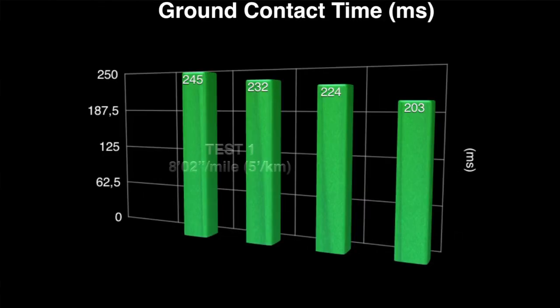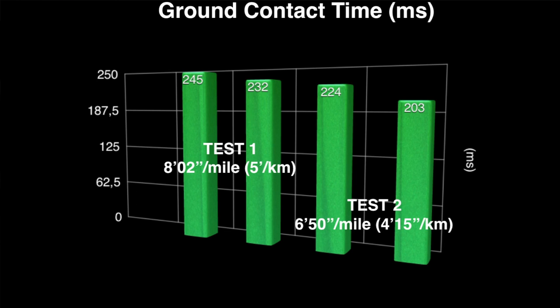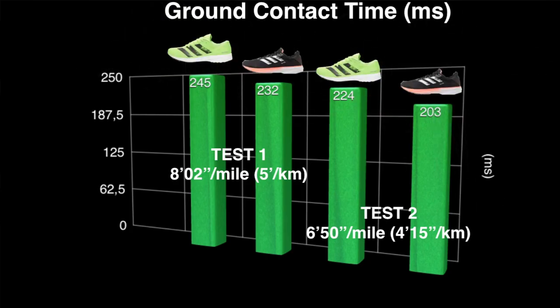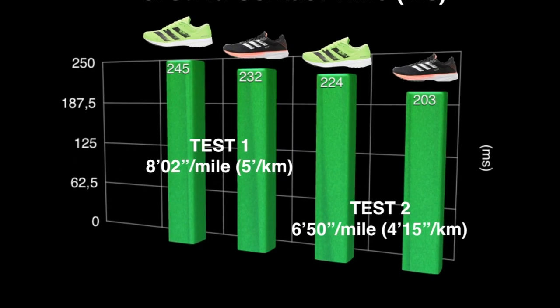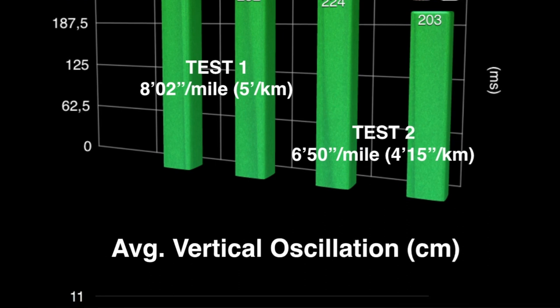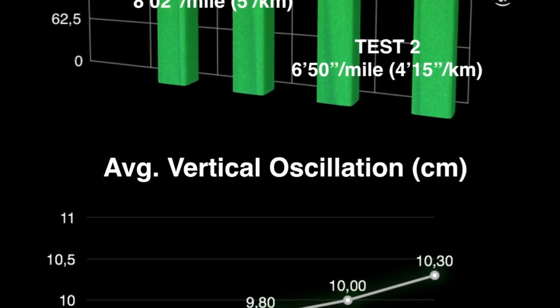Let's start with the first two tests — the slower ones. As you can see here, these are the ground contact times in milliseconds, which seem to be slightly different at the same pace using different shoes. The SL20 has in both tests the shorter contact time, meaning I'm expecting a higher vertical oscillation. And actually, looking at the vertical oscillation in both tests, the oscillation is higher using the SL20.